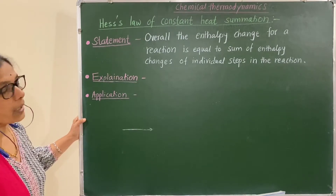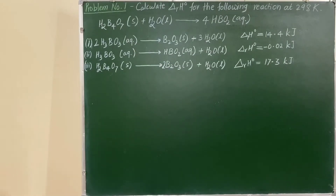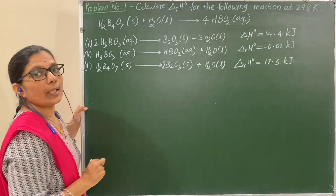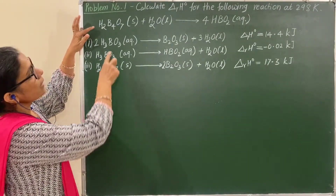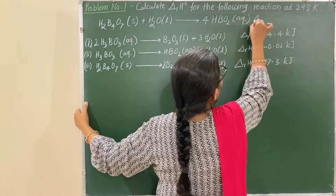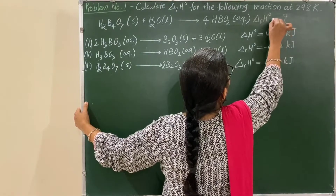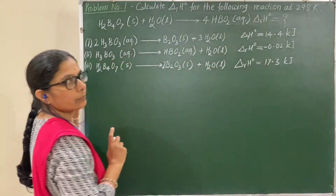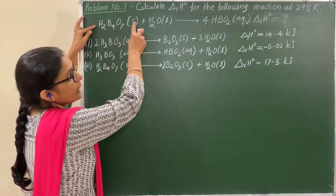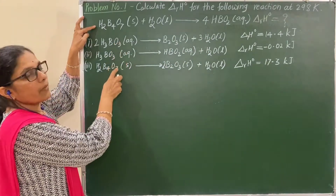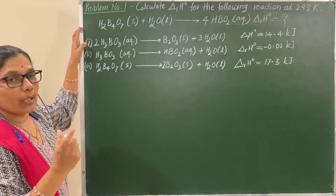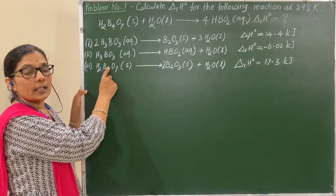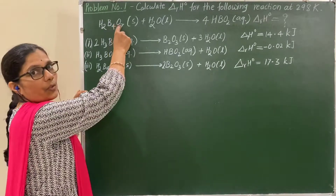Now let us see a numerical problem based on Hess's Law that gives a clear idea about its application — how it is used to determine the enthalpy change of reactions. The problem: calculate the enthalpy change for the following reaction at 298 Kelvin. Three equations are given along with their enthalpy changes. Our aim is to obtain the target equation from these equations.